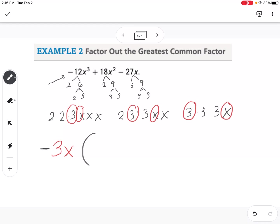And then what I do is I write what's left. So 2 times 2 is 4x squared. And by taking out that negative, putting it out front, it's going to change the sign of everything inside. So now that's a positive 4x squared.